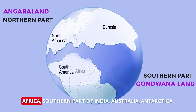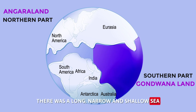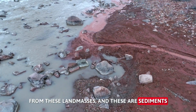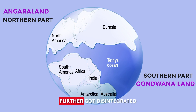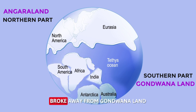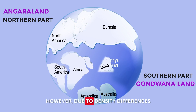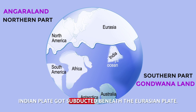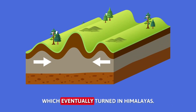Gondwana Land consisted of South America, Africa, the southern part of India, Australia, and Antarctica. Between Gondwana Land and Angara Land, there was a long, narrow, and shallow sea known as Tethys Sea. Sediments were brought by rivers from these land masses and deposited in the bed of the Tethys Sea. Over a period of time, Gondwana Land further disintegrated; the Indian Plate broke away and started moving towards the Eurasian Plate. Due to density differences, the Indian Plate got subducted beneath the Eurasian Plate, and because of this subduction and compression, a series of folds were formed which eventually turned into the Himalayas.